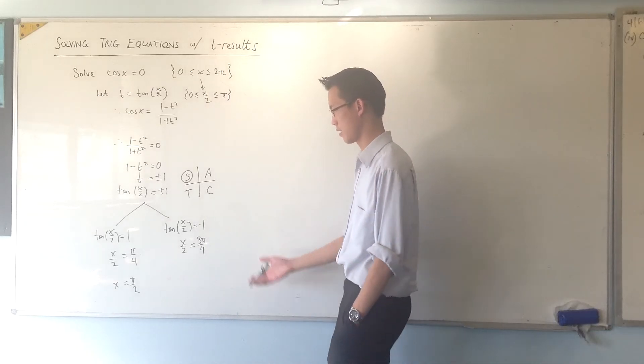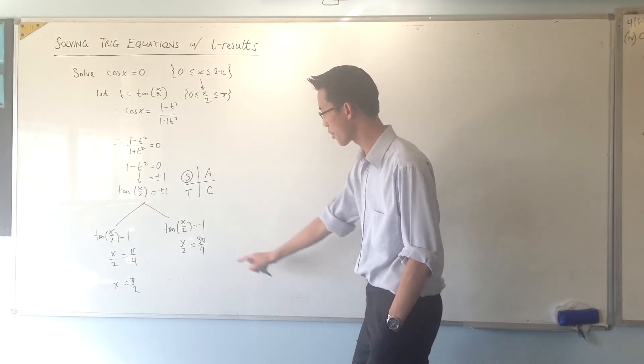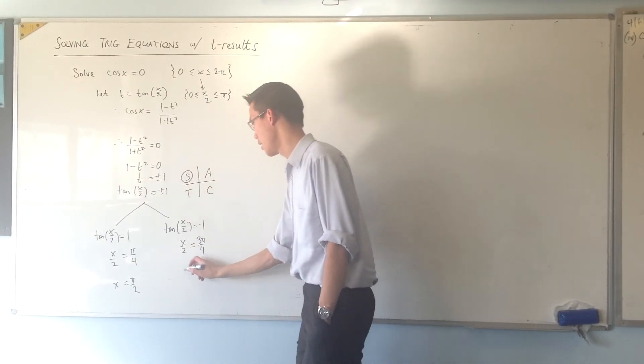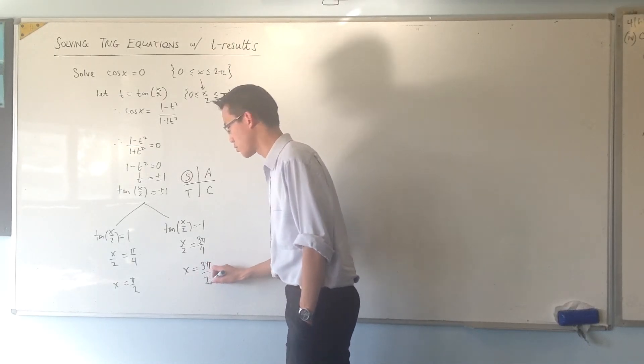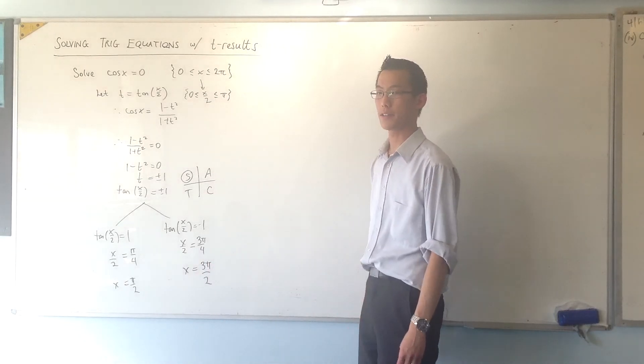You can verify that. Chuck it in your calculator. 3 pi on 4 is in this quadrant. That's why it's negative. Multiply by 2. And there are your two answers. Pi on 2. 3 pi on 2.